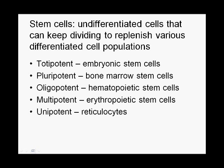We can classify stem cells according to their degree of differentiation potential. Totipotent cells, such as the cells of the early stage embryo, are able to produce any cell in the body, and a totipotent cell still has the capability of essentially producing an entire human being. Pluripotent stem cells are able to produce many different types of cells, but not necessarily all different types. And then we get progressively more restricted: oligopotent, several types; multipotent, still less; and unipotent, only one type of cell.